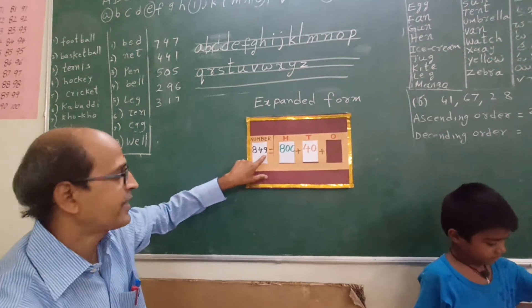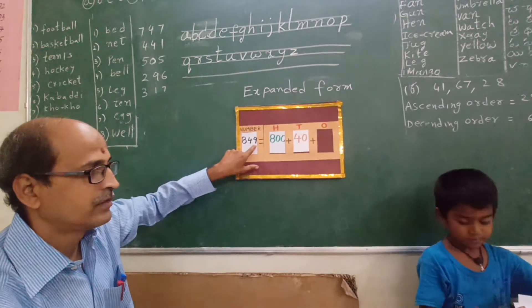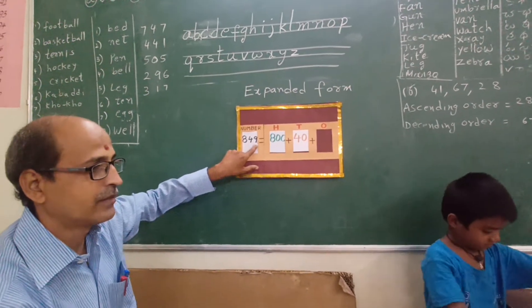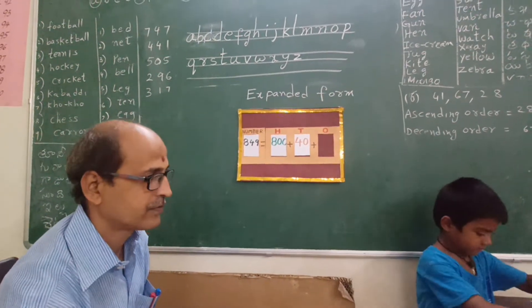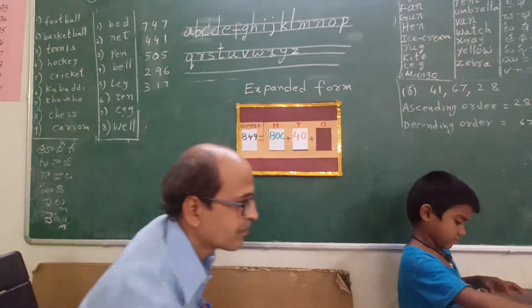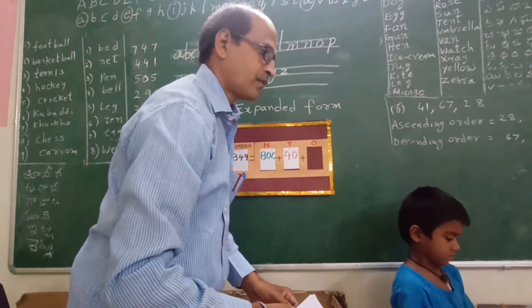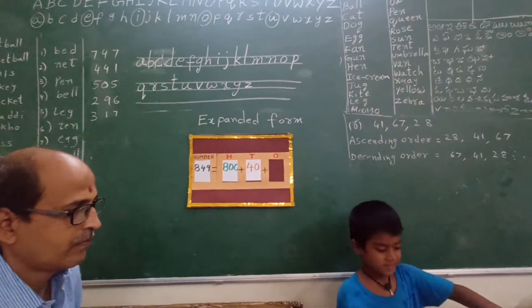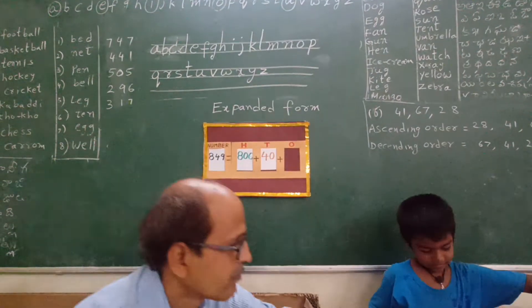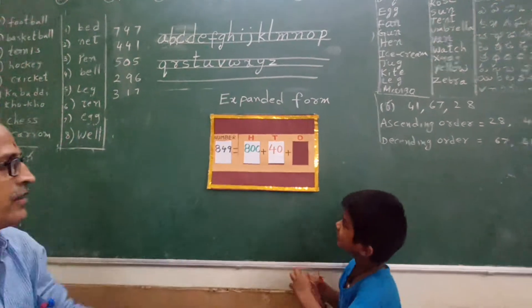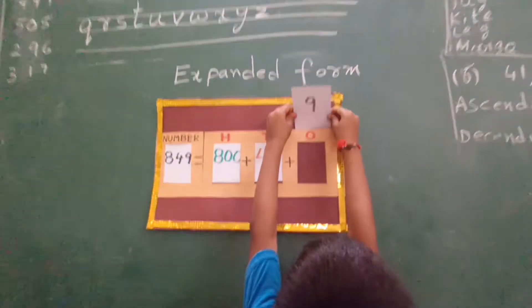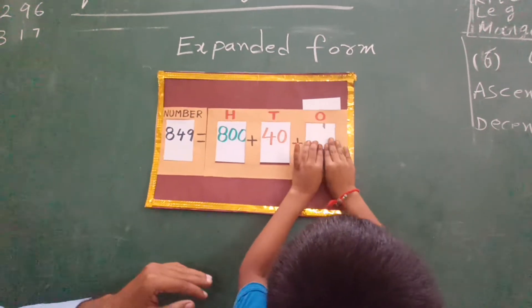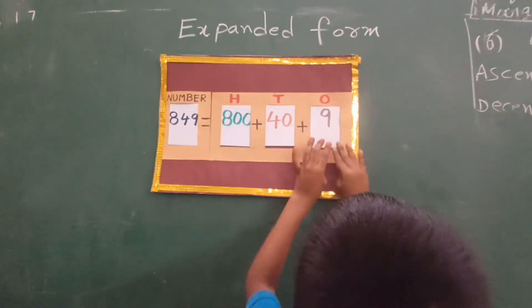What is this number here? Take the name card — 100 cards. Insert the name card in there. Okay. Now again read this number.